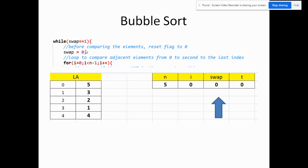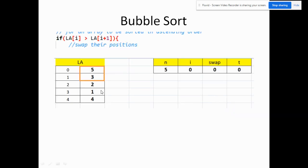Let's trace through the code. While swap is equal to 1, we set swap to 0. Then our loop starts with i equal to 0, running while i is less than n minus 1, incrementing by 1. Note that swap starts with value 0. We compare la[i] — that is index 0 — with la[i+1], which is index 1. So we are comparing these two values. The value at index 0 is higher than at index 1, which is actually yes.